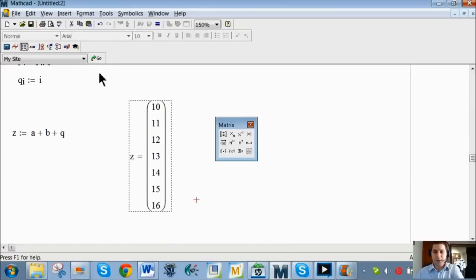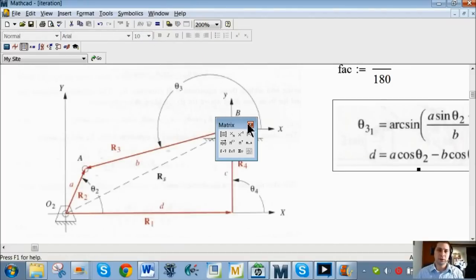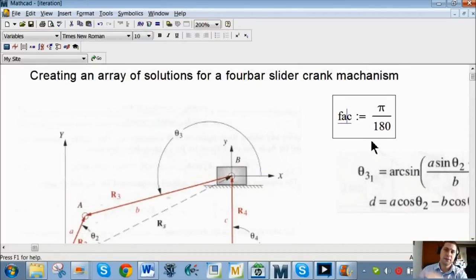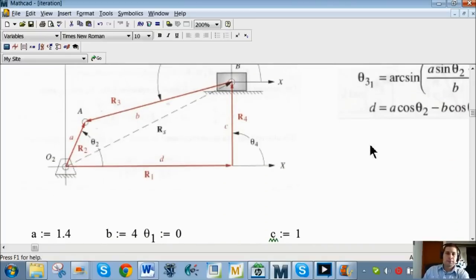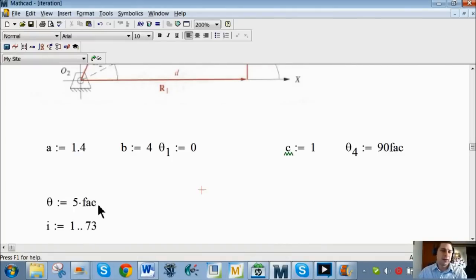Well, if we want to go back to our little offset slider crank here. This factor term is just to convert back and forth from degrees and radians. Because MathCAD requires you to do all your calculations in radians. So I've defined the given information from the problem.